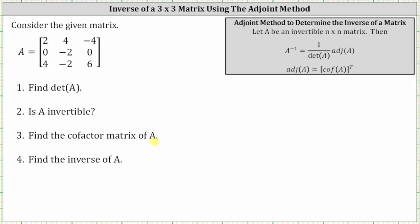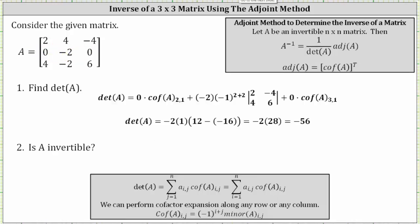We will perform cofactor expansion on row two because row two has two zero entries. Starting with the first entry in row two, the determinant of matrix A is equal to zero times cofactor two comma one. Because we have a zero in the product, we don't have to find cofactor two comma one. So we move along to the second entry in row two, which is negative two.